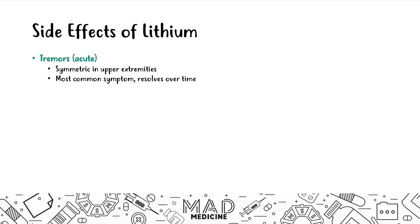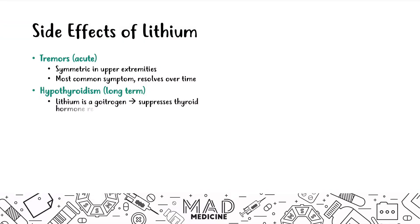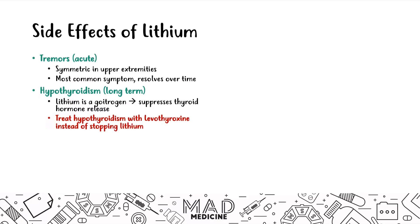The first long-term side effect is hypothyroidism. Lithium is a goitrogen — goitrogens suppress thyroid hormone release by preventing the release of thyroid hormone. In this case, you want to treat patients who develop hypothyroidism with levothyroxine instead of stopping lithium. You want to supplement T3 and T4 to normalize thyroid levels rather than discontinuing lithium, since lithium both reduces the frequency of bipolar manic episodes and treats acute bipolar mania.